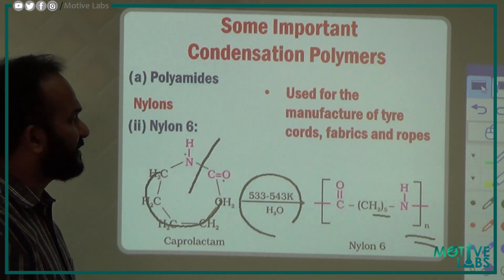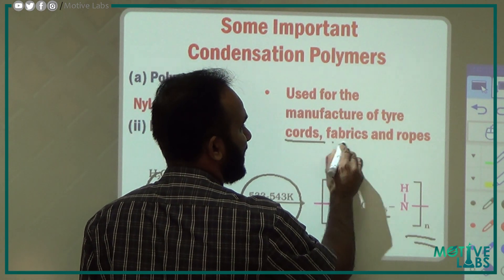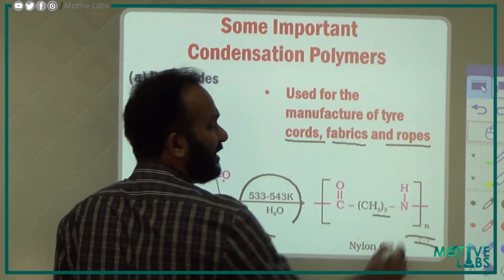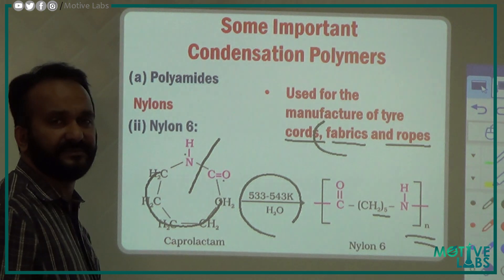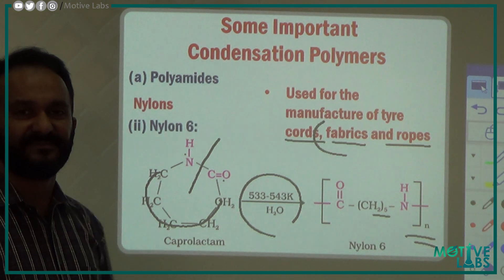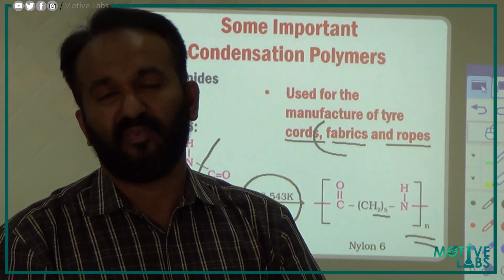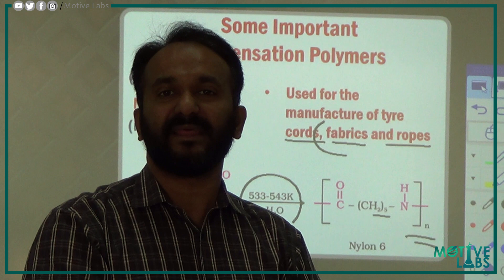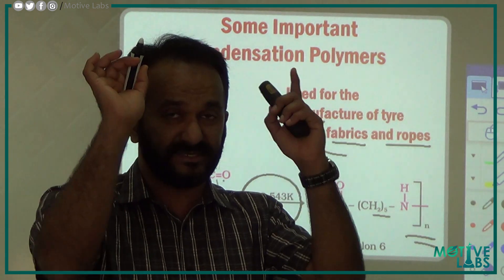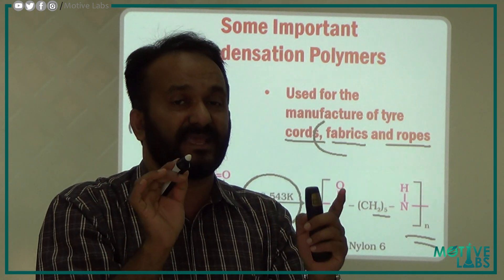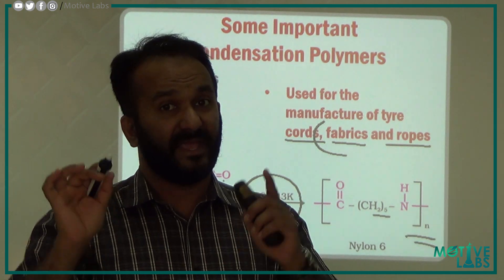Nylon 6 is very purposeful. It is used for the manufacture of tire cords, fabrics, and ropes. Nylons fall under the polyamide category. They are condensation polymers. In the polyamides category, we have Nylons.